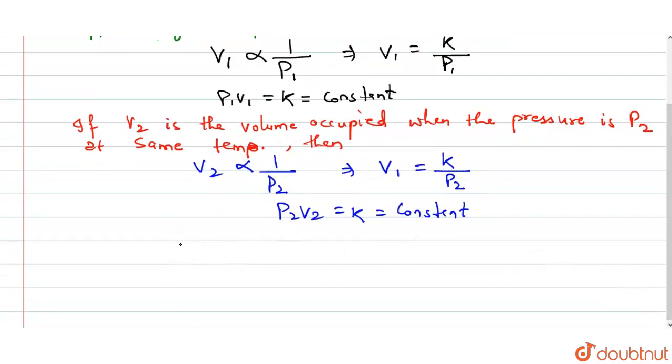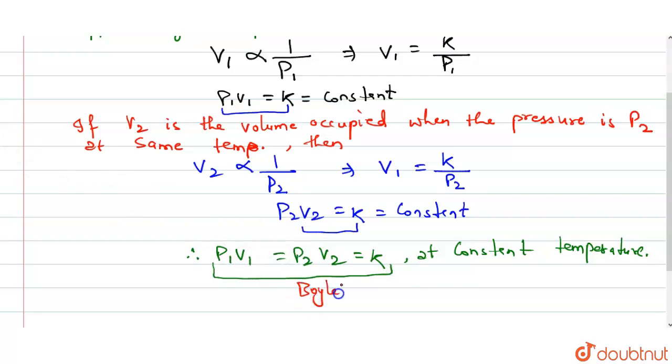We have both equations equal to K. Hence, P1V1 is equal to P2V2 is equal to K at constant temperature. This is called Boyle's law equation.